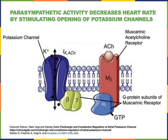Here we see the mechanism through which the neurotransmitter acetylcholine stimulates a decrease in heart rate by activating potassium channels. Acetylcholine released from postganglionic parasympathetic fibers binds to the M2 muscarinic acetylcholine receptor, leading to activation of a G protein. The beta-gamma subunit of the G protein then binds to and activates a potassium channel, and as potassium flows out of the cell, this causes a decrease in the slope of the pacemaker potential, contributing to a decrease in heart rate.